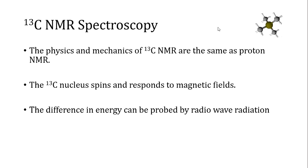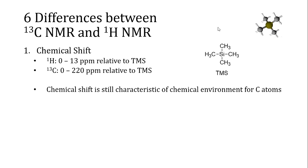Carbon-13 NMR spectroscopy shares a lot of similarities to hydrogen or proton NMR spectroscopy. The carbon-13 nucleus has a spin, it responds to magnetic fields, and the difference in energy between those spin states can be probed by radio wave radiation. But there are some important differences as well.